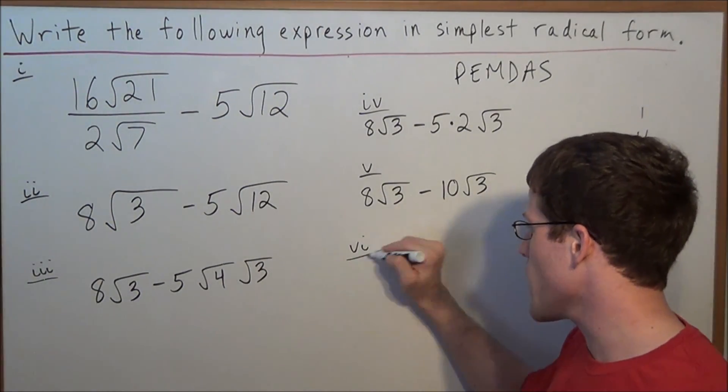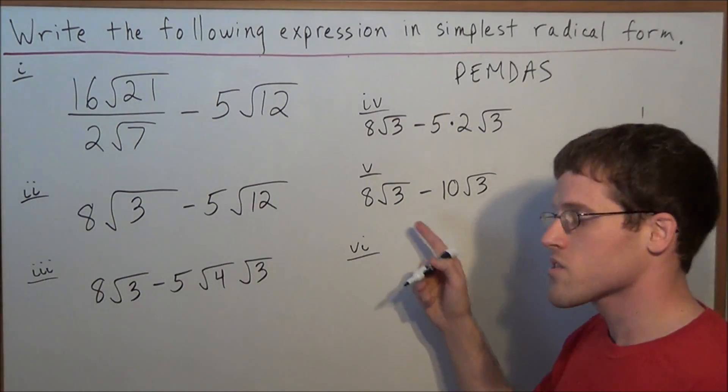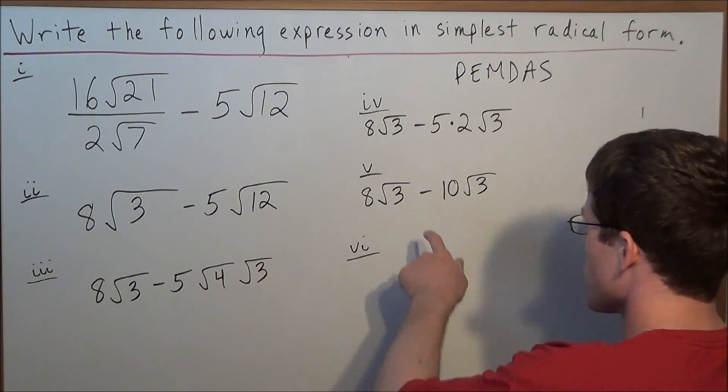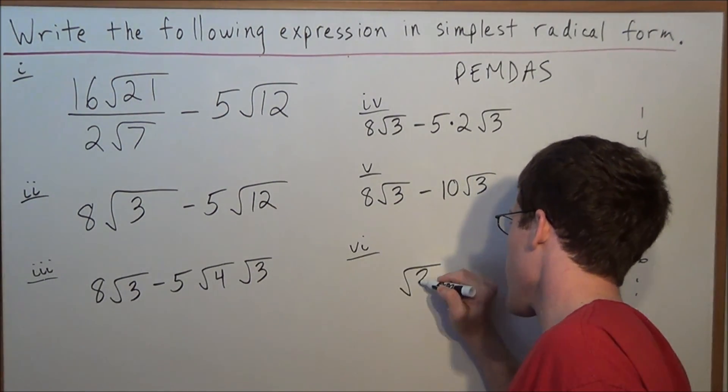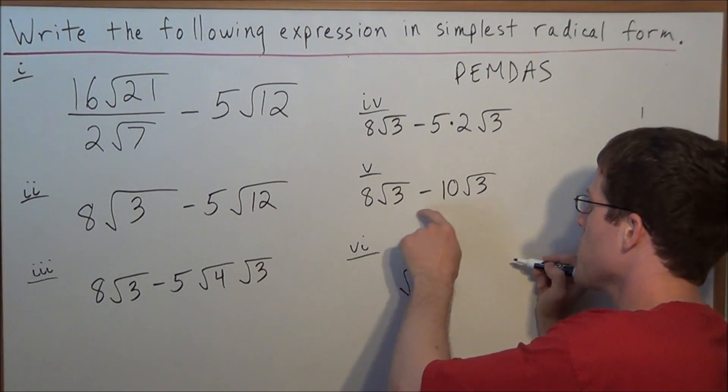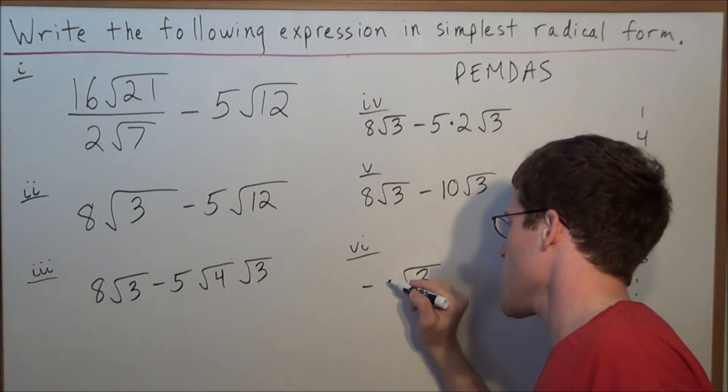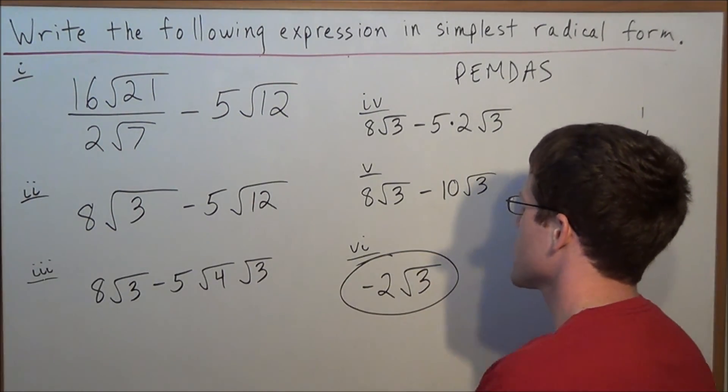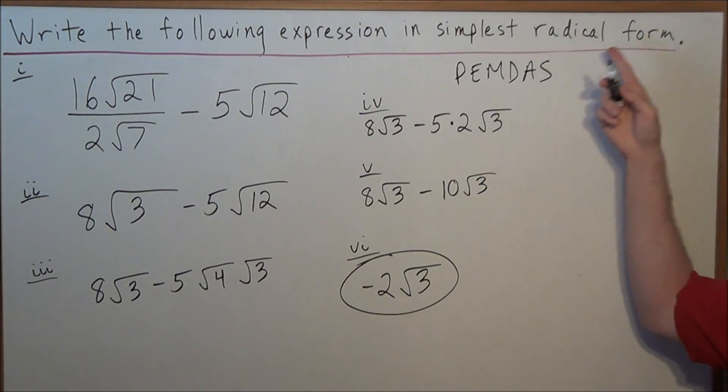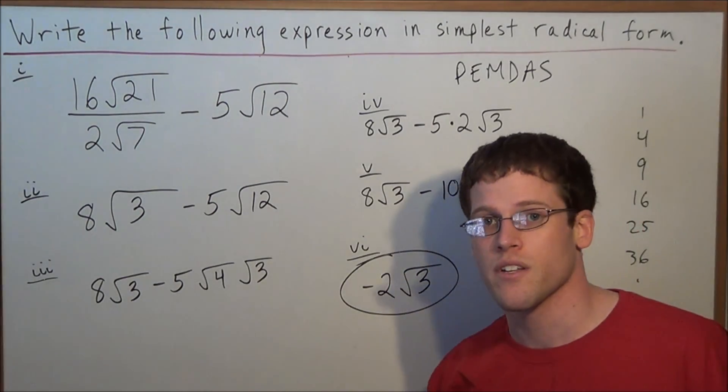So now for the last line, to finish this problem, when we subtract radicals, it's important to note that we keep the radical the same. So we have radical 3, but we're subtracting 8 minus 10. And 8 minus 10 is negative 2. So this tells us that our final answer in simplest radical form is negative 2 radical 3.